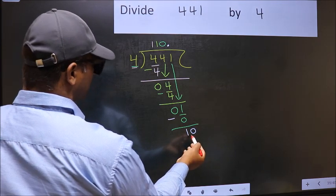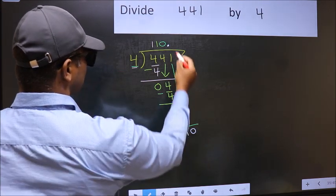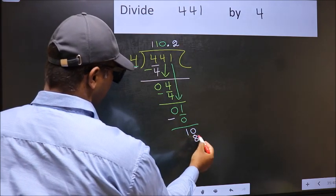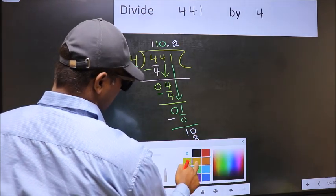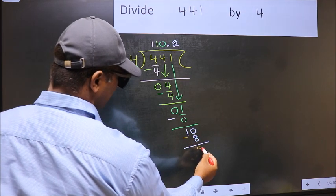So, 10. A number close to 10 in 4 table is, 4, 2's, 8. Now, you should subtract. 10 minus 8, 2.